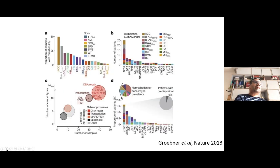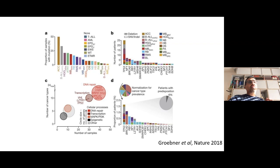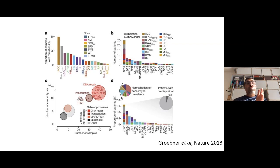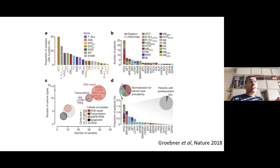Another reason childhood cancer is particularly likely to benefit from sequencing is the great contribution that germline predispositions make. We estimate that in about 10% of children there is a pathogenic germline mutation present — most of the time without obvious stigmata. Therefore we depend on unbiased sequencing to reveal these, and there is no easier way of doing that than whole genome sequencing.